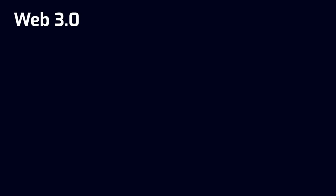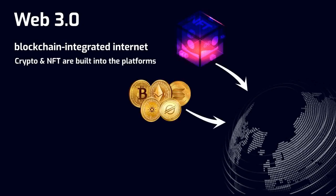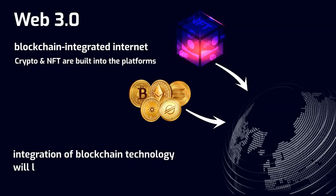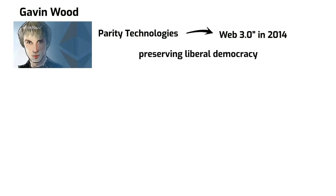And finally, we come to the latest web version. Web 3.0 is a blockchain-integrated internet, or an internet where cryptocurrencies and NFTs are built into the platforms you use. In a more specific way, we can say Web 3.0 is an internet owned by users. Gavin Wood, founder of blockchain infrastructure company Parity Technologies, coined the term Web 3.0 in 2014, and believes decentralized technologies are the only hope of preserving liberal democracy.